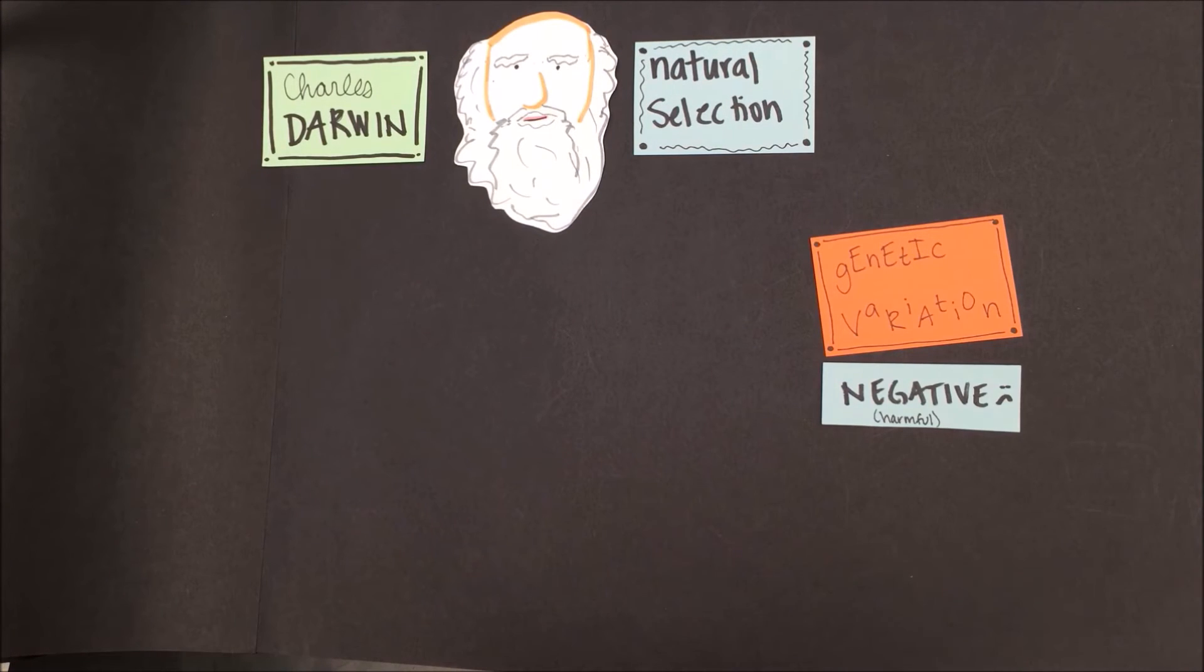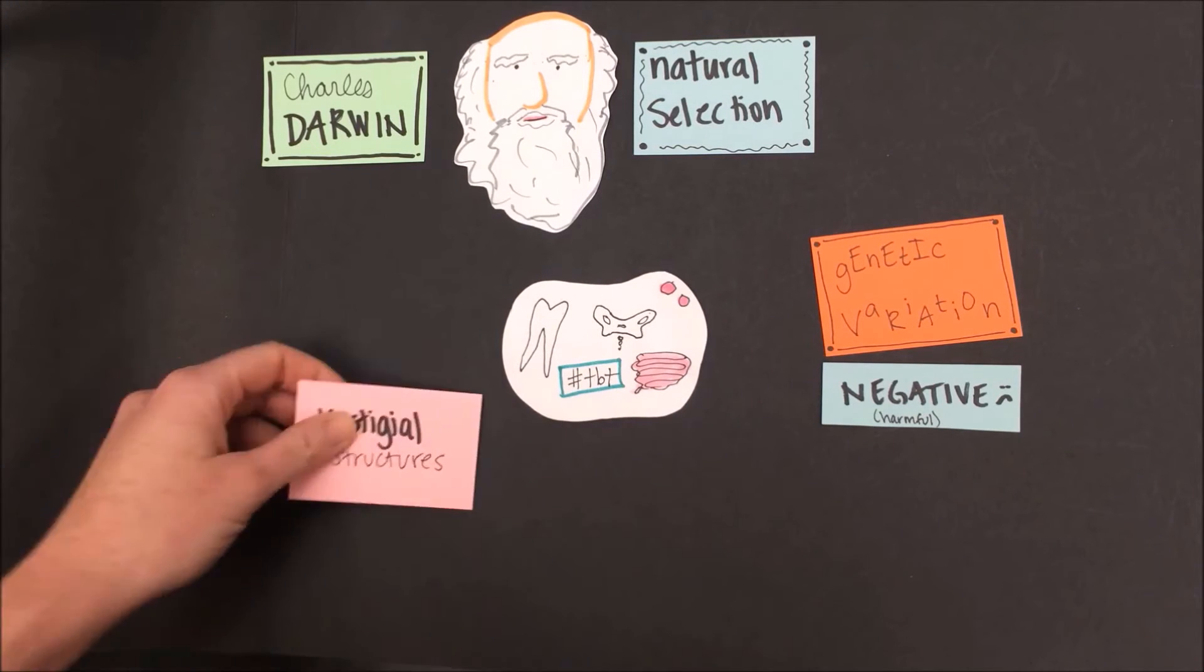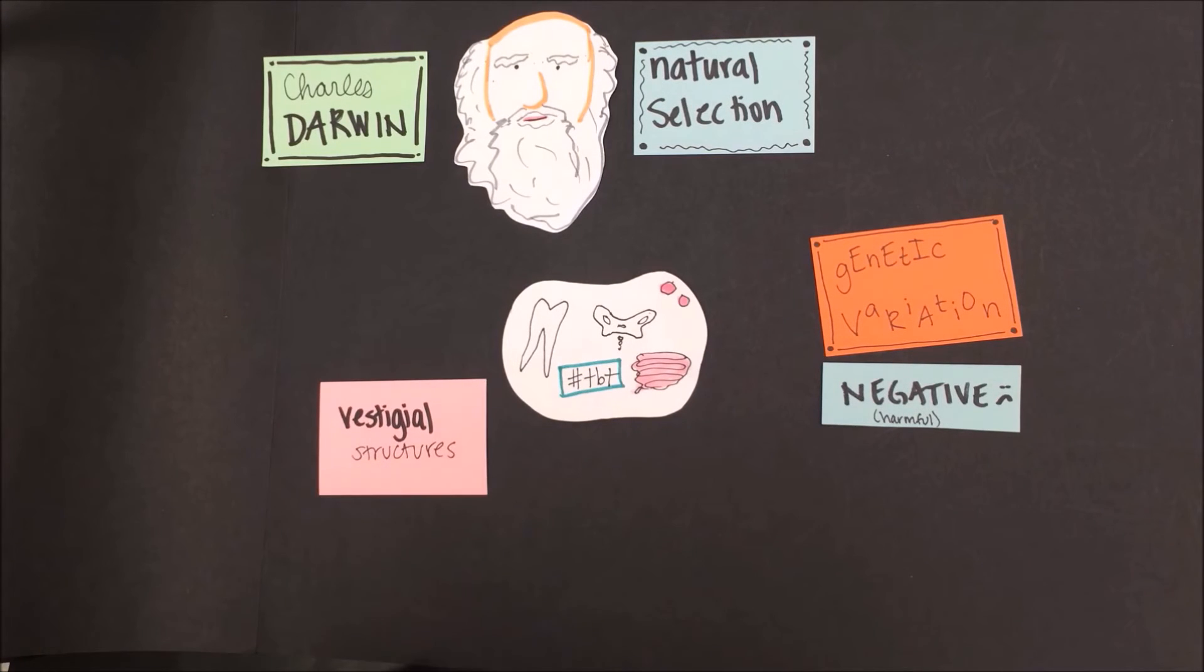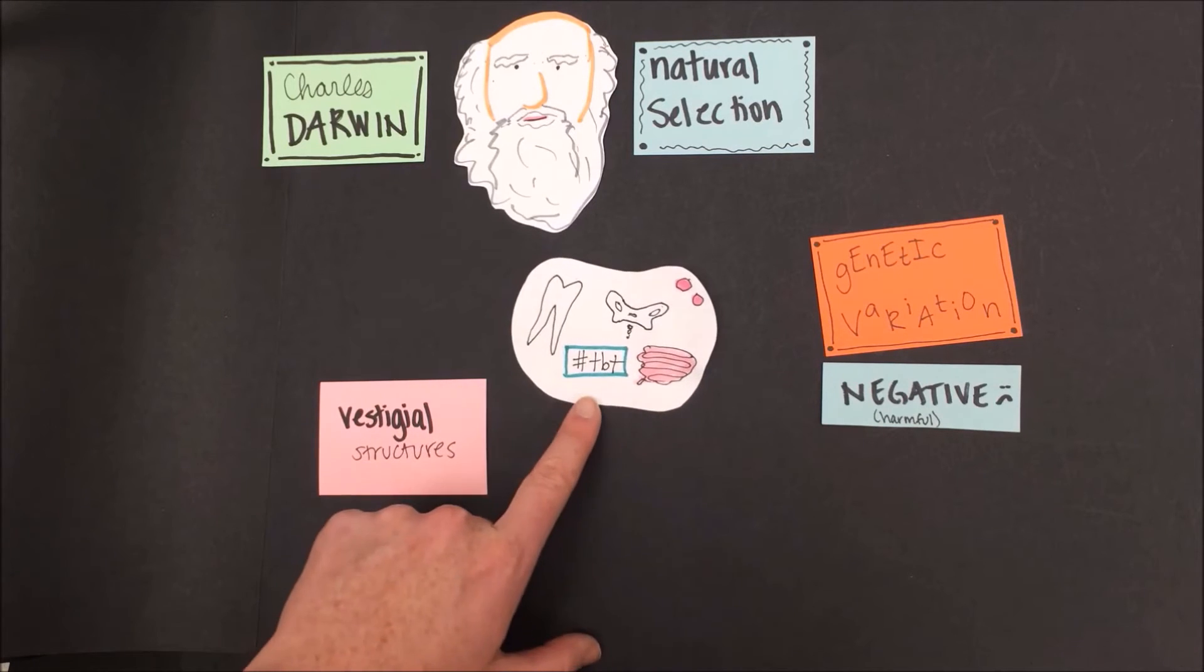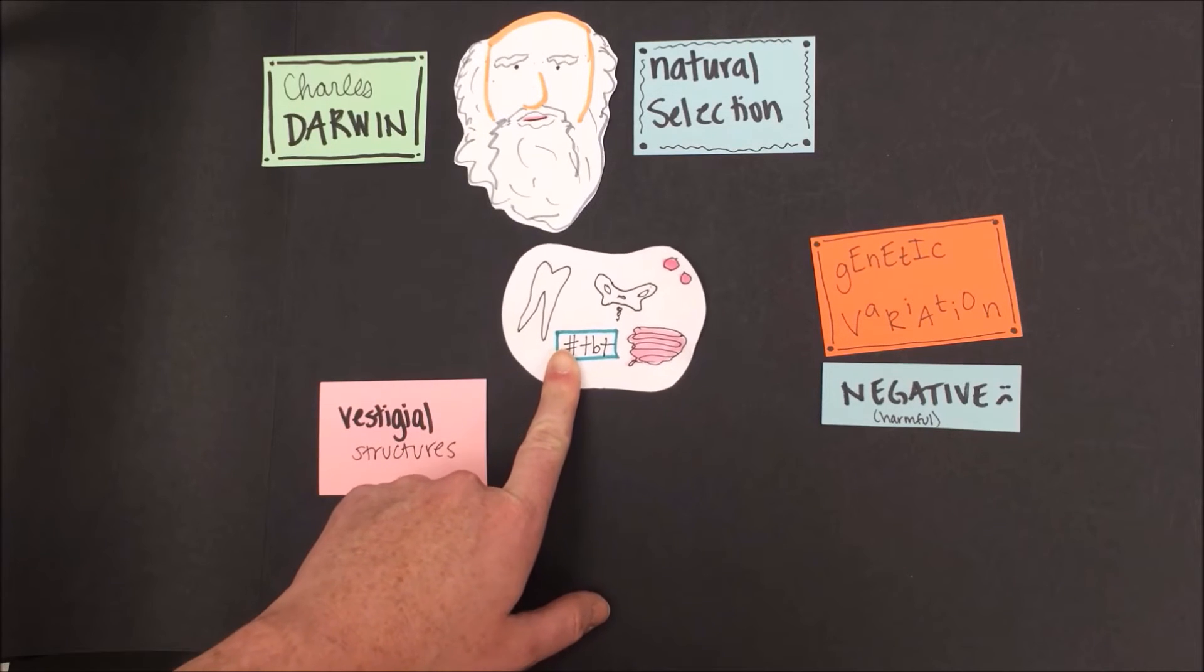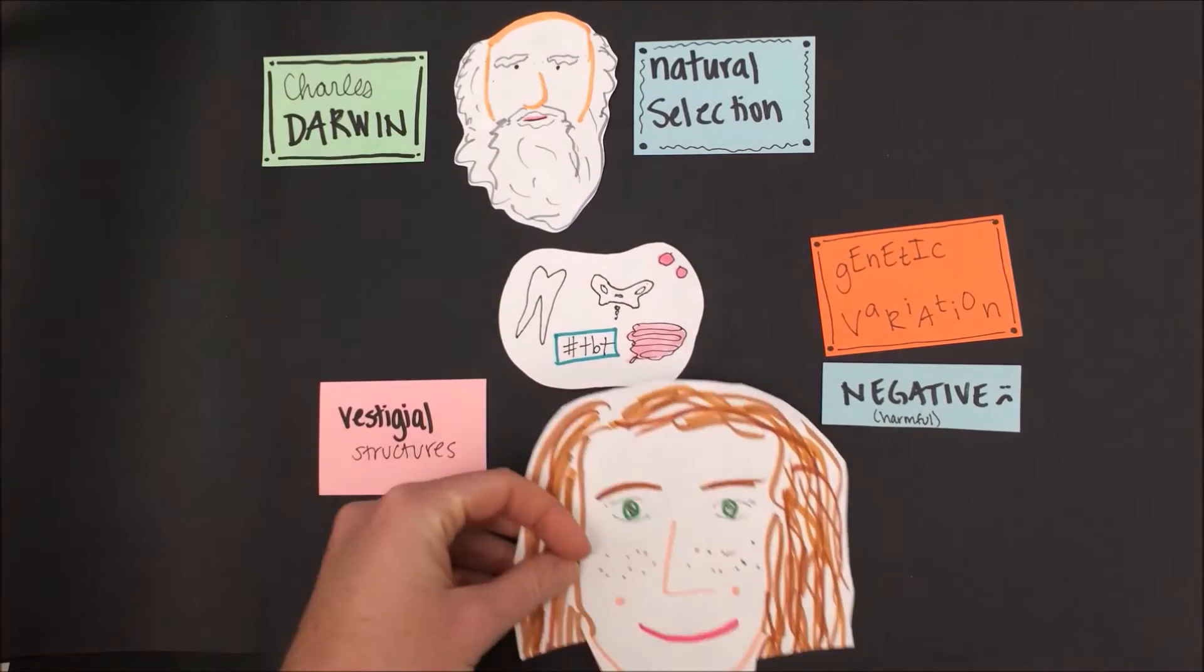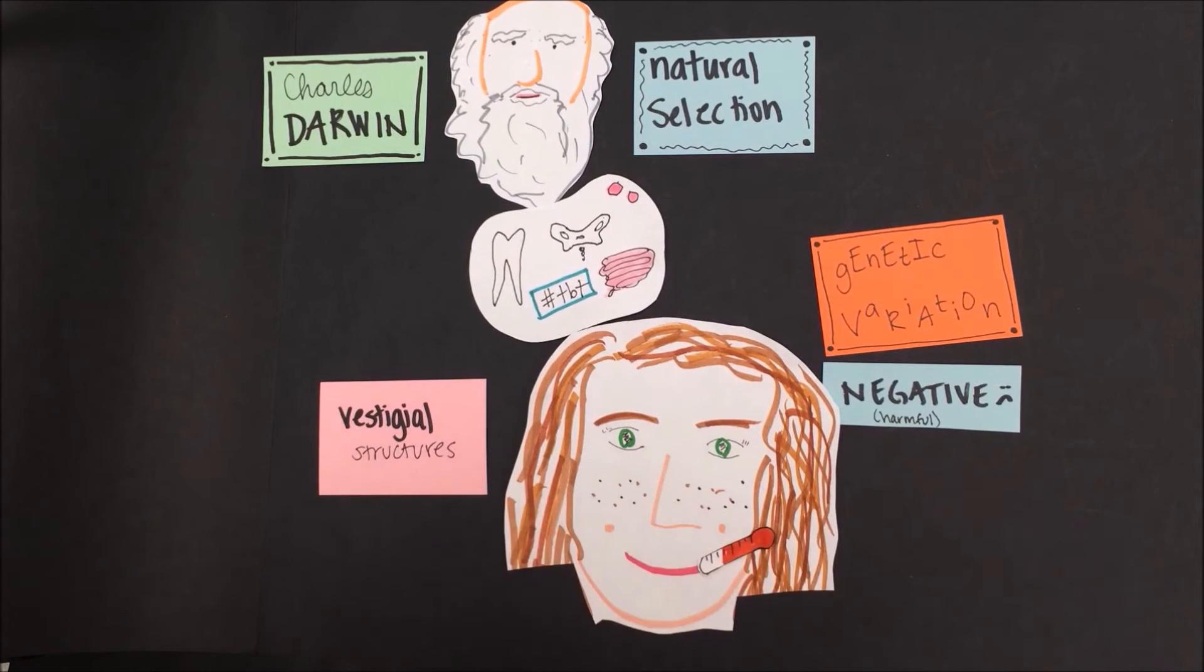If a genetic variation or trait is negative or less helpful, we would expect to see it less and less in a population. Such is the case for vestigial structures, such as human wisdom teeth or the tailbone, tonsils, or the appendix. These are structures that might have been helpful in the past but are no longer really that useful to us in the present day. In fact, a lot of these things can hurt you more than they can help you. If you have infected tonsils or a burst appendix, you can get really sick depending on the situation.